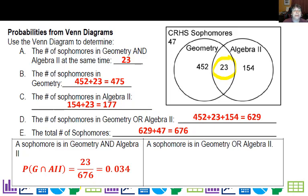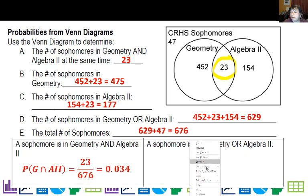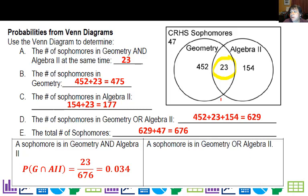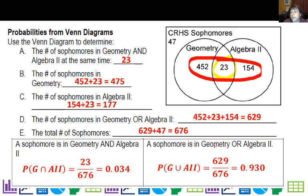Notice how much it changes when I say OR. So when I say OR, that means I include Algebra 2, I include Geometry, so that's this whole group right here for the OR. And I get 629 over 676, or about 93% of sophomores are in Geometry or Algebra 2.